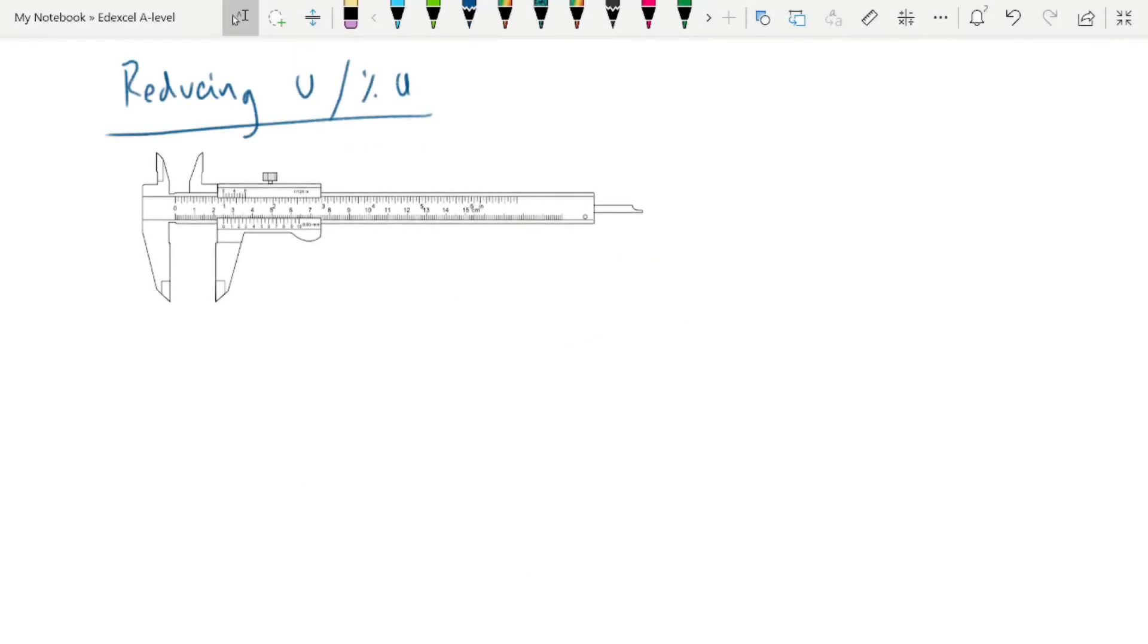How do you reduce your uncertainty or percentage uncertainty? The only way to reduce your uncertainty is to use an instrument with a higher resolution. And again, this is just for single measurements.